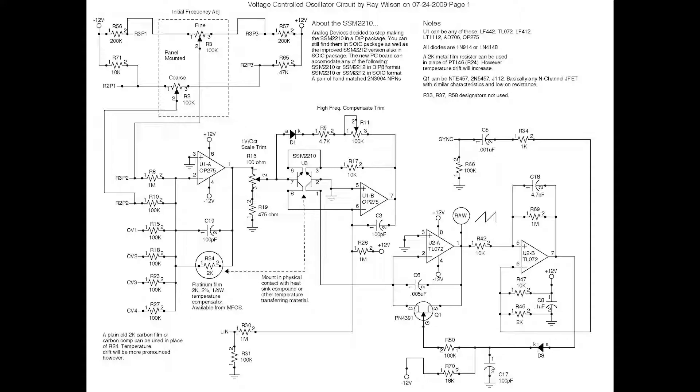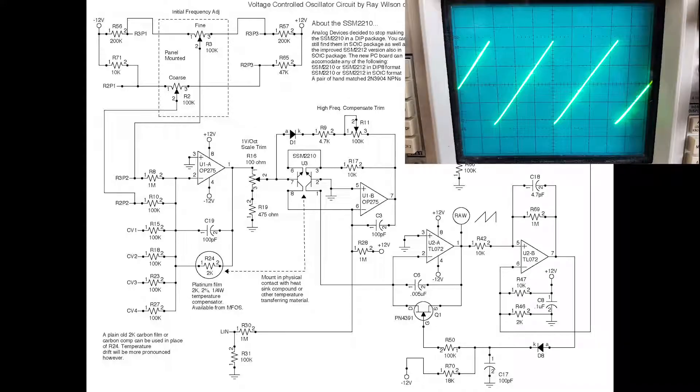Basically there's like waveform shaping circuitry down the line that makes all the different waveforms. But the master oscillator makes a ramp wave.